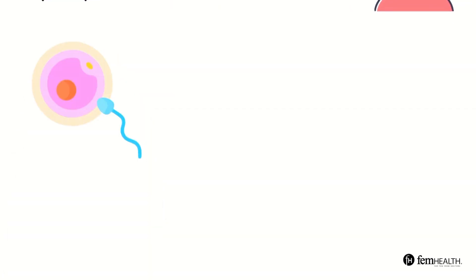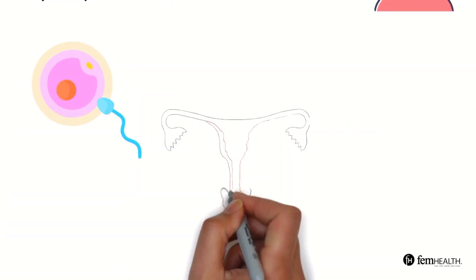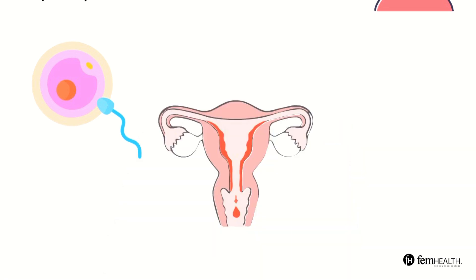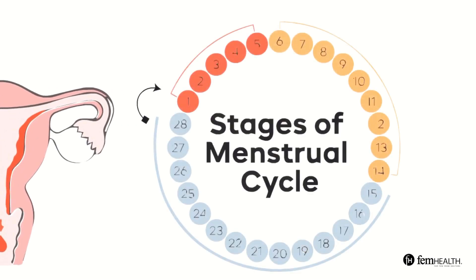If a sperm does not fertilize an egg, the uterine lining breaks down and sheds which starts the menstrual cycle again. This will bring us back to day one of the menstrual cycle when the menstrual phase and the follicular phase begin again.